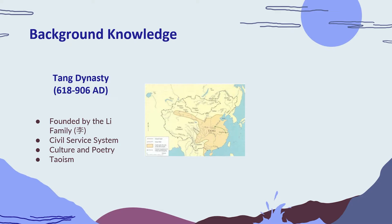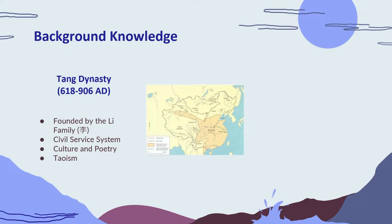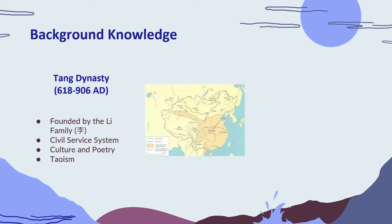Today's lecture is going to cover Chinese history and particularly two dynasties: the Tang and the Song dynasty. For some background knowledge, the Tang dynasty was founded by the Li family in 618 to 906 AD. Some of the more important aspects include the civil service system, culture and poetry, and they mostly followed the religion Taoism.